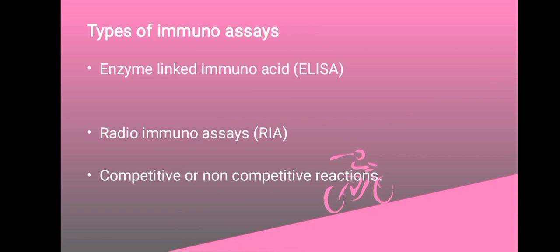The next type is radioimmunoassay, abbreviated as RIA, in which the antibodies are labeled with a radioactive isotope, which is then measured. There is also enzyme immunoassay, in which enzymes are used and the reaction is monitored through a color change or through an emission of light. We also have competitive or non-competitive reactions. A limitation of immunoassays is that they may not provide explicit identification.